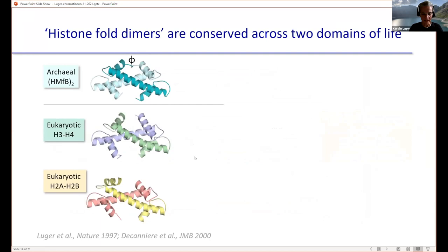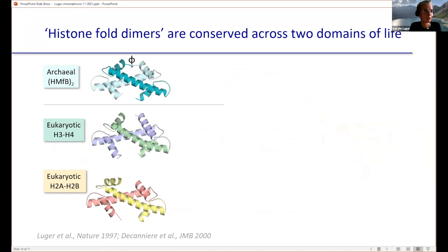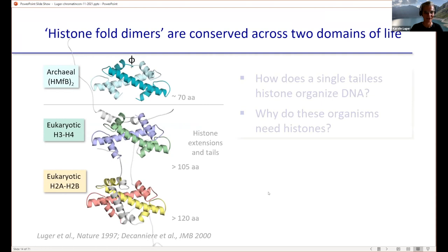Across the board there's about 20–40% sequence similarity, so archaeal histones are quite dissimilar from eukaryotic histones and not more similar to H3 than to H2A. Despite this low sequence homology, the structures of the histone fold dimers are very similar — discovered by John Reeve's lab using NMR and X-ray crystallography. Structurally they look very similar, except eukaryotic histones have additional histone tails and extensions that archaea lack.